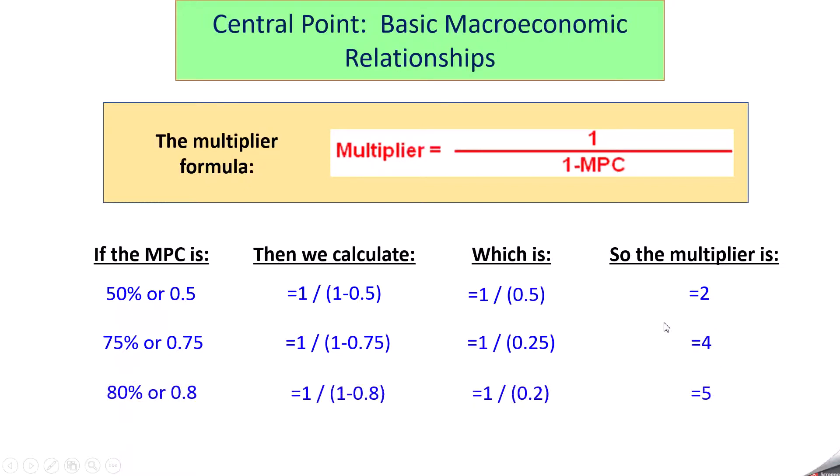A couple more scenarios here. If the MPC is at 80%, the multiplier becomes a 5. And if it's a 90%, the multiplier becomes a 10. As you'll quickly notice, the higher the MPC is, the higher the multiplier becomes.